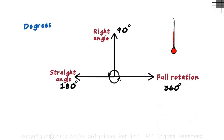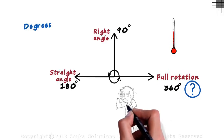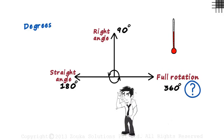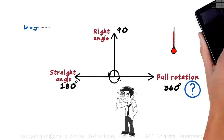This brings us to the question: why 360 degrees? Why not 1000 degrees? Because 1000 sounds very convenient. Why can't one full rotation be 1000 degrees? Think about it — I will probably be making another video to explain this.